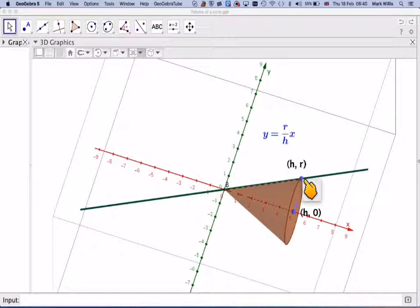So the equation of the line will be the gradient, which is this distance divided by this distance. So that's going to be r divided by h, so y equals mx. So the gradient is going to be,